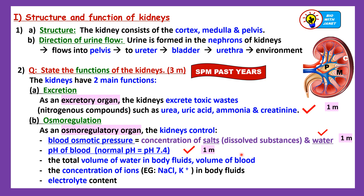So for the question 'what are the functions of the kidney?' — kidneys control the blood osmotic pressure by regulating the concentration of salts and water in the blood (one mark), and the kidneys control or regulate the pH of the blood (one mark). That's three marks altogether. Other than that, the kidneys control the total volume of water in body fluids, and also regulate the concentration of ions in body fluids — not only hydrogen ions, but also sodium ions, chloride ions, potassium ions — and regulate the electrolyte content.